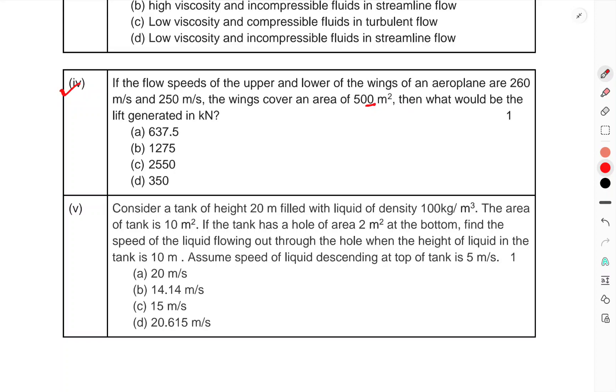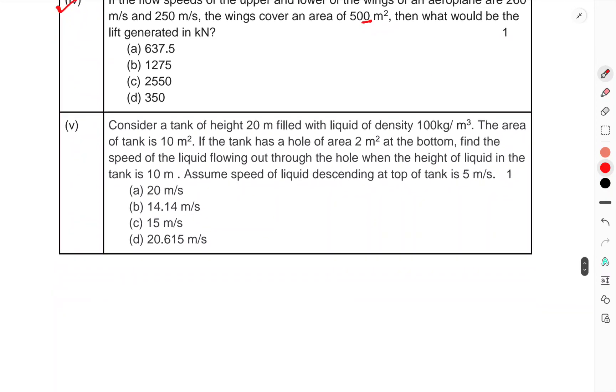Question 12 part (ii), consider a tank of height 20 m filled with liquid of density 100 kg/m³. The area of tank is 10 m². If the tank has a hole of area 2 m² at the bottom, find the speed of the liquid flowing out through the hole when the height of liquid in the tank is 10 m. Assume the speed of liquid descending at the top of the tank is 5 m/s.